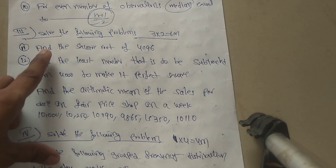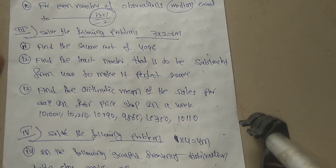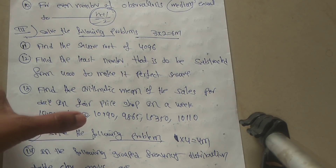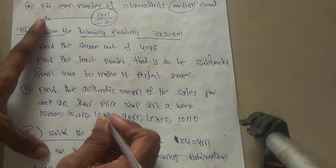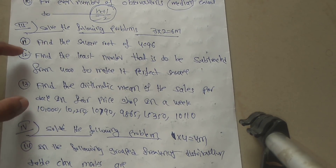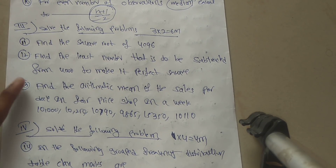Third bit: solve the following problems — 3 questions, 2 marks each, totalling 6 marks. Question 11: find the square root of 4096. Question 12: find the least number to be subtracted from 4000 to make it a perfect square. Question 13: find the arithmetic mean of the sales per day in a fair price shop in a week: 10,000; 10,250; 10,790; 9,865; 15,350; 10,110.